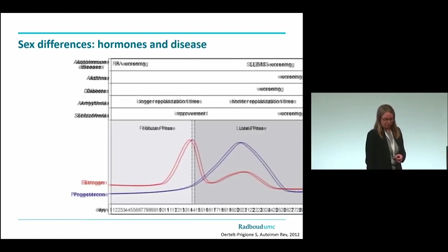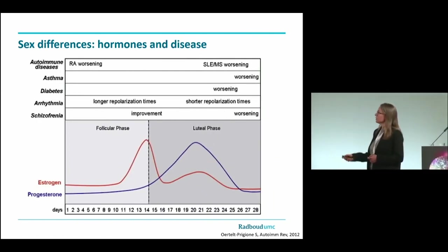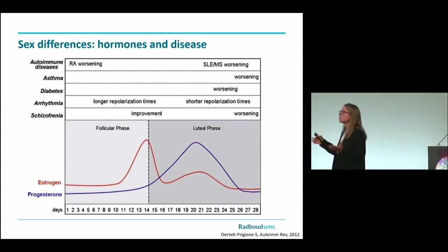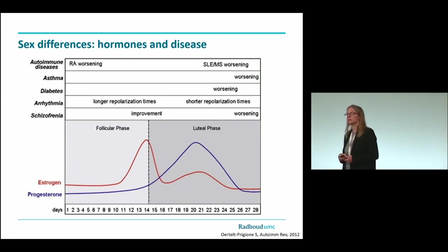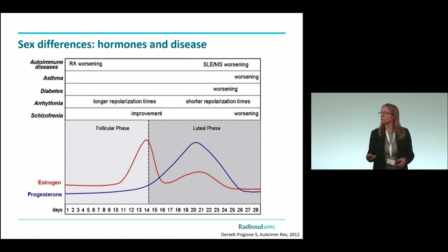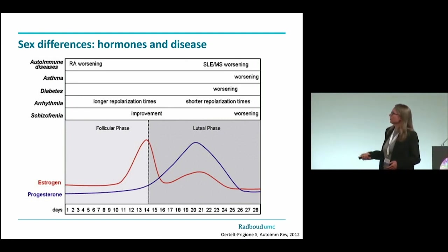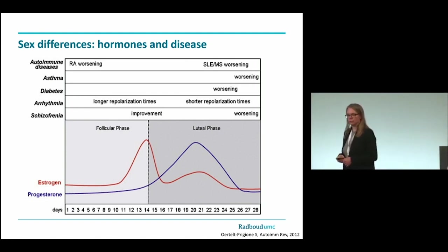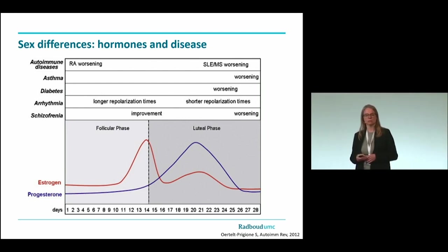Does it matter for disease? Yes. It's not just the cells — these cells do something to the body. For example, in younger women, when are they most likely to present in the ER with an asthma attack or with decompensated diabetes? Right before menstruation. The same goes for arrhythmia, a series of mental conditions, and most autoimmune diseases. So these changes in cells also affect clinical presentation.